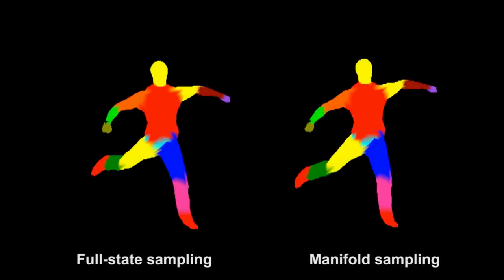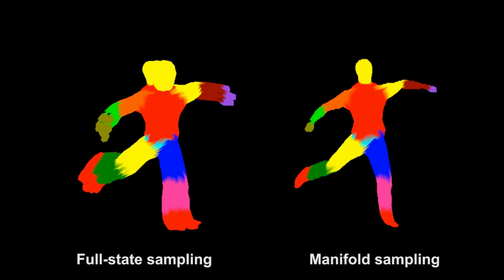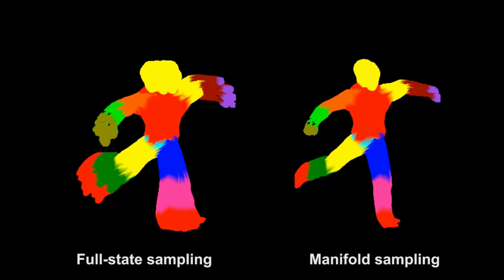Here, the proposed manifold sampling is compared with sampling in the full state. Observe how the uncertainty is reduced.